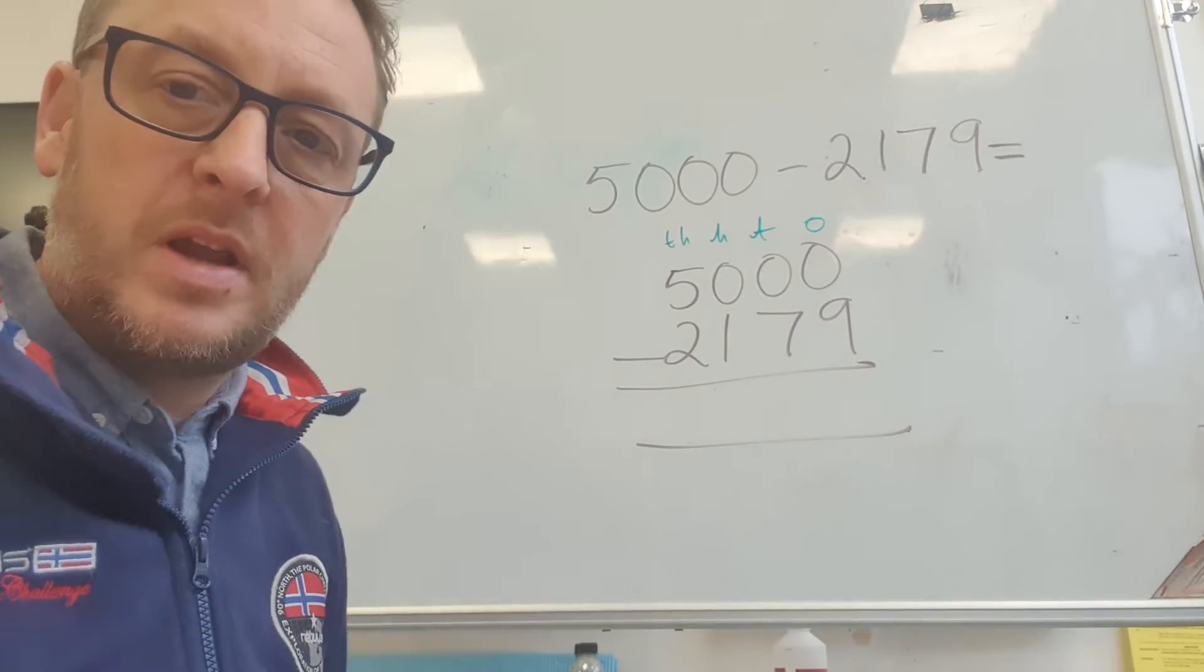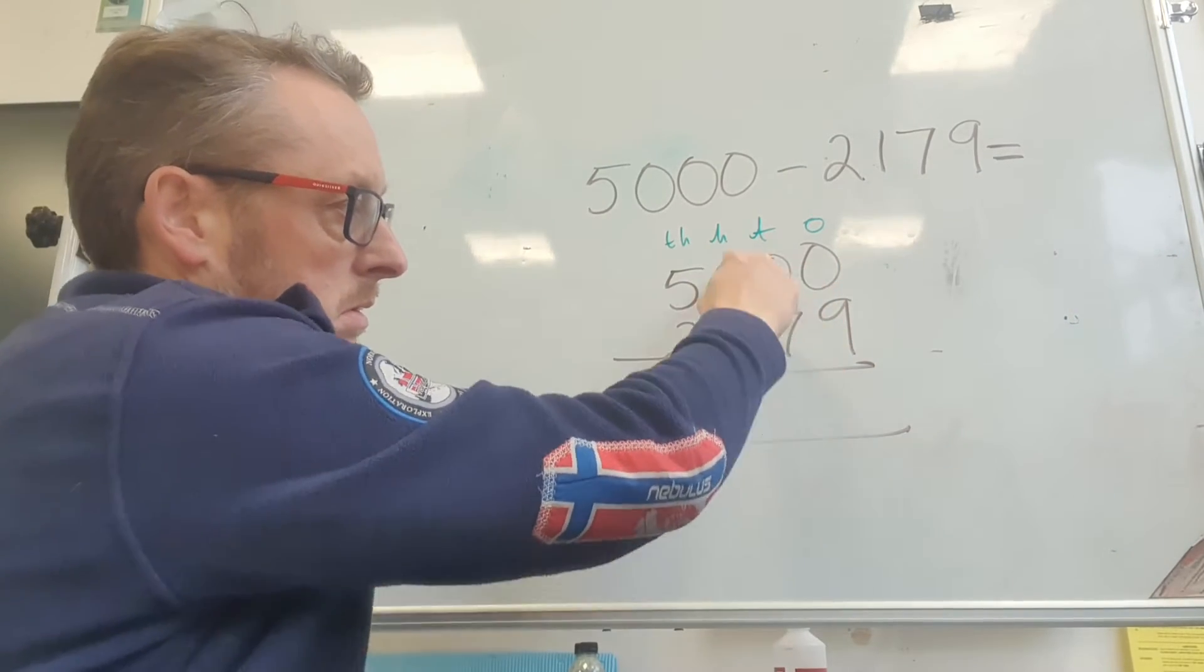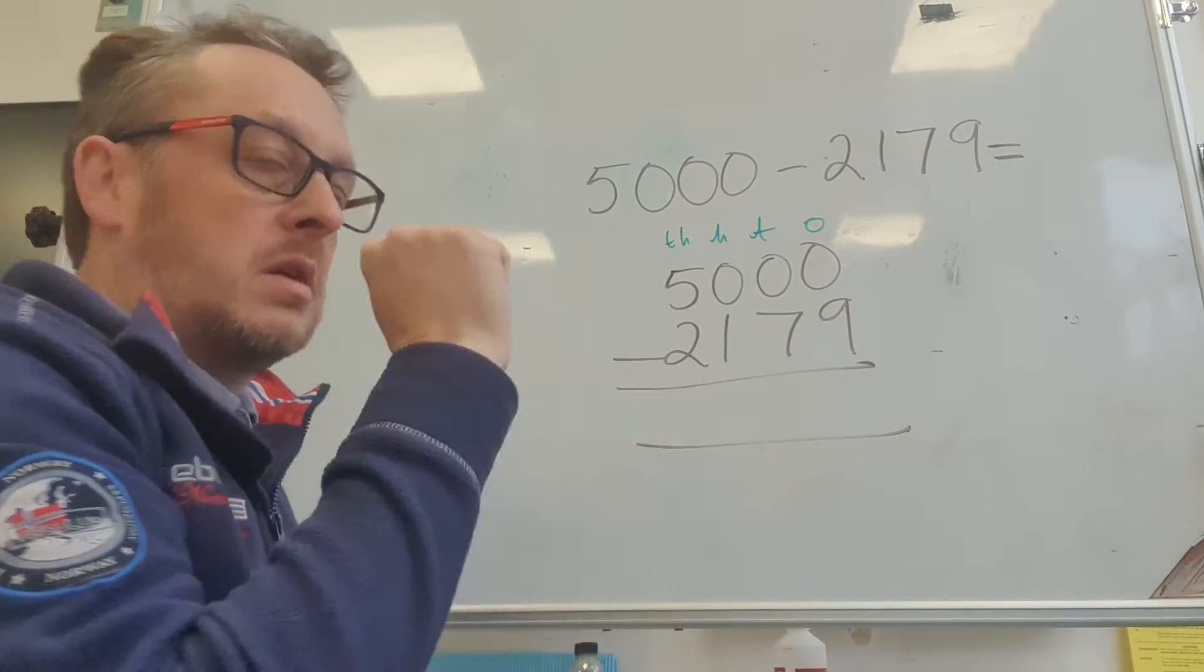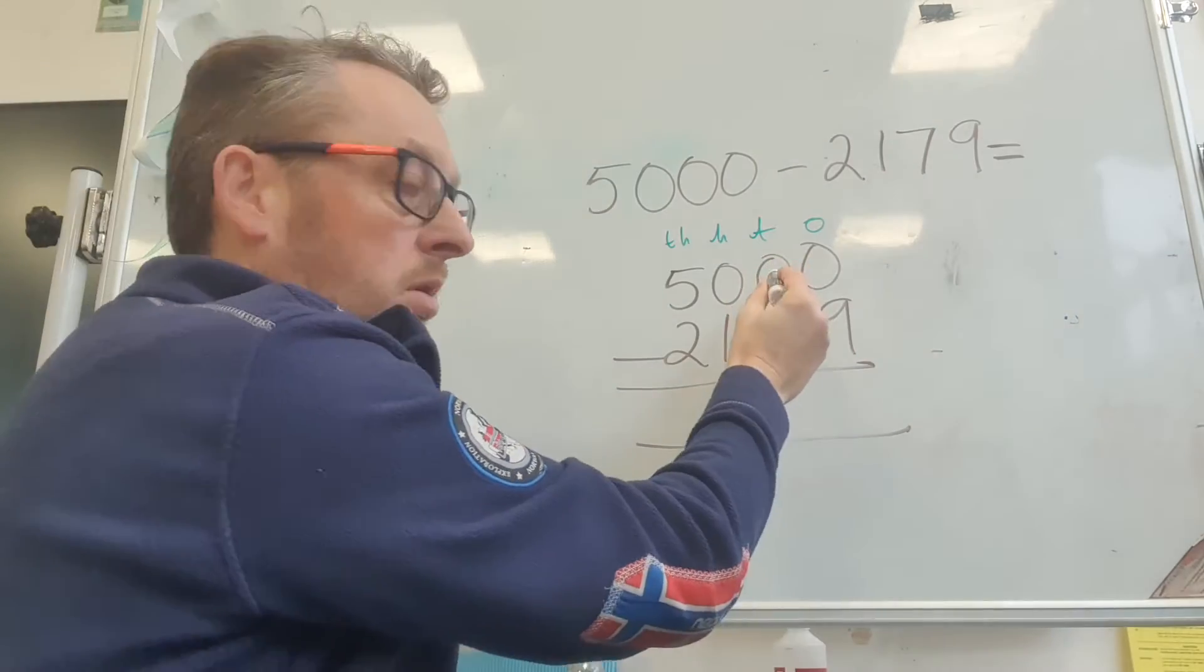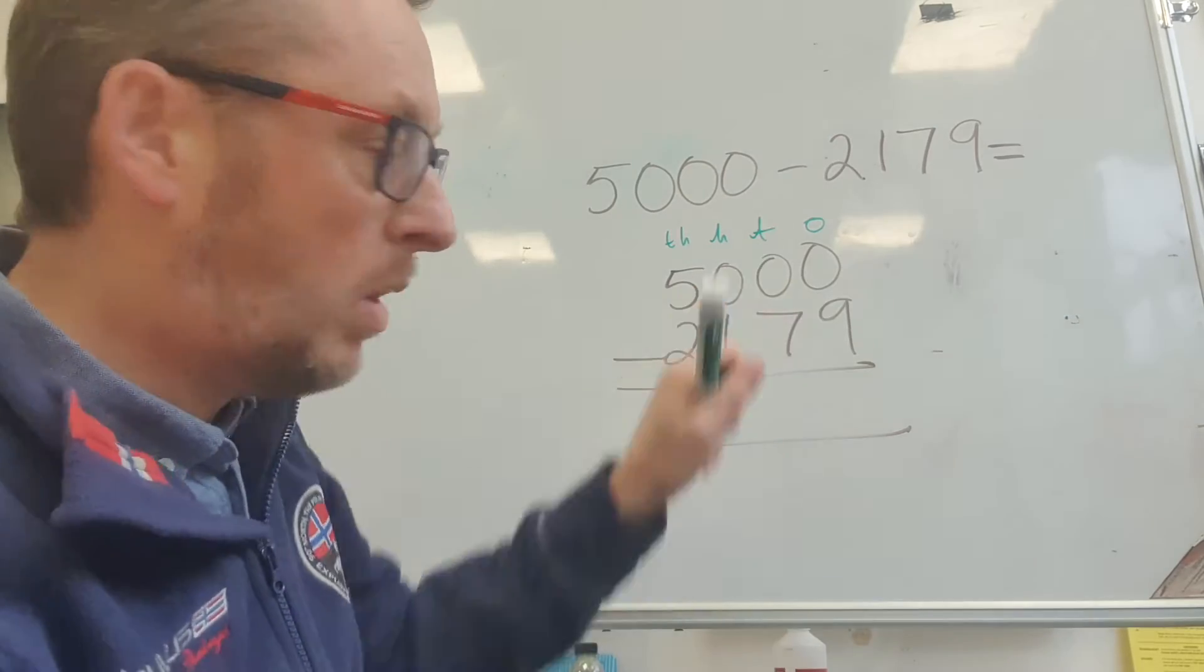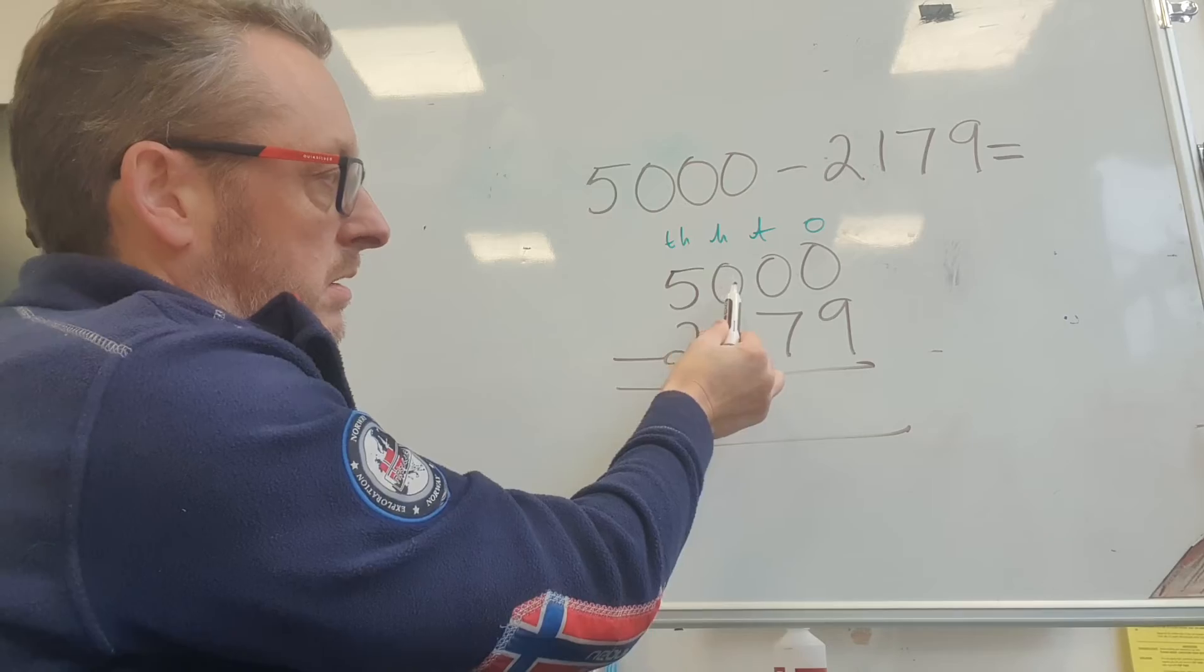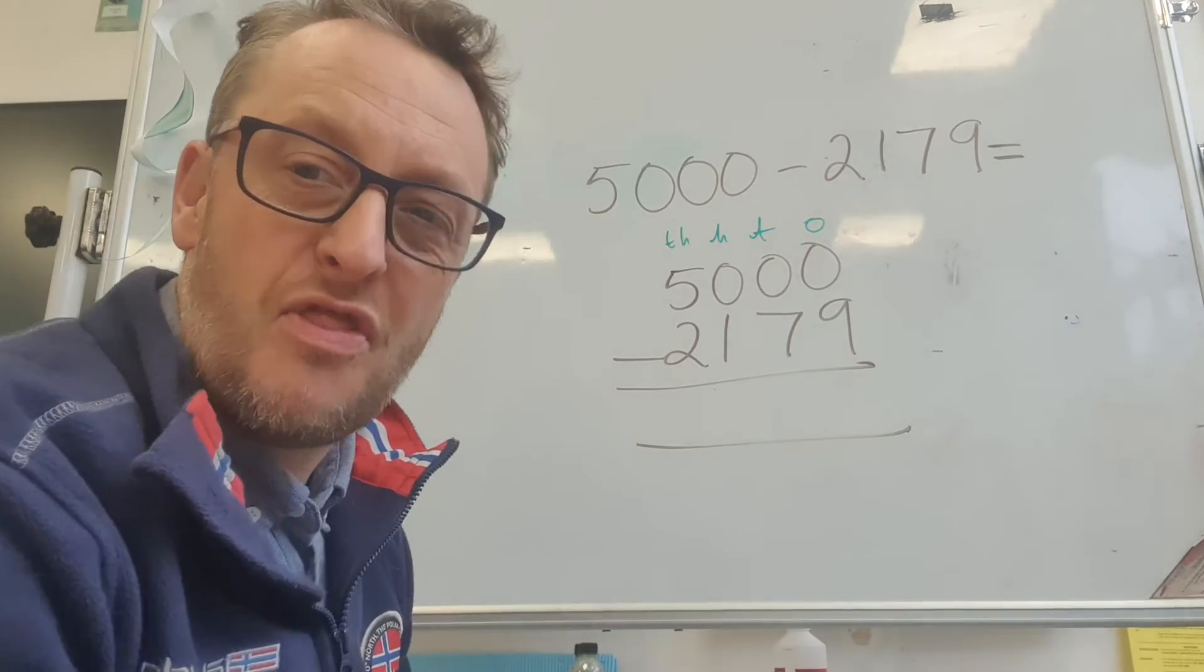Now what problem have we got straight away? It's going to be a bit clunky and quite long to take all these numbers away. I've got to do 0 takeaway 9. Can we do it? No. I've got to go next door and exchange some numbers, but what problem have I got? Let's go next door, but it's still a 0. We've now got to go all the way over to our thousands.